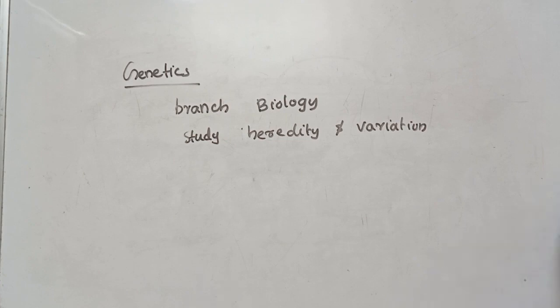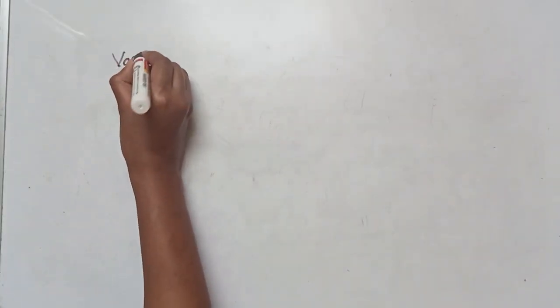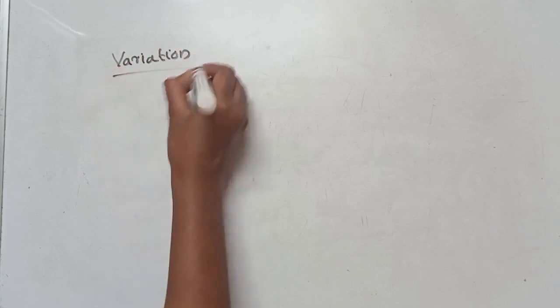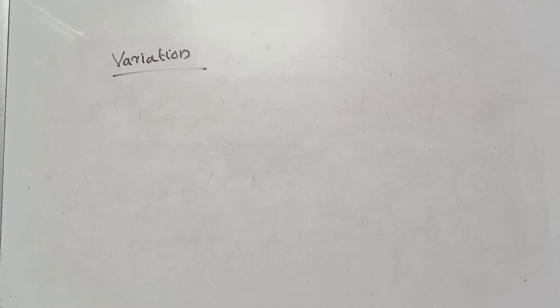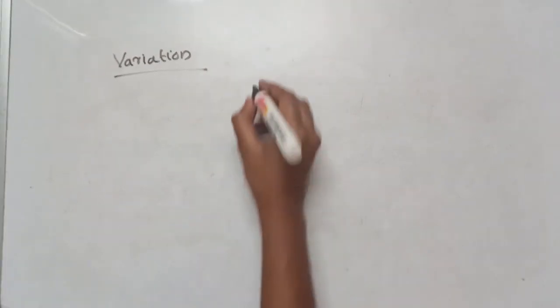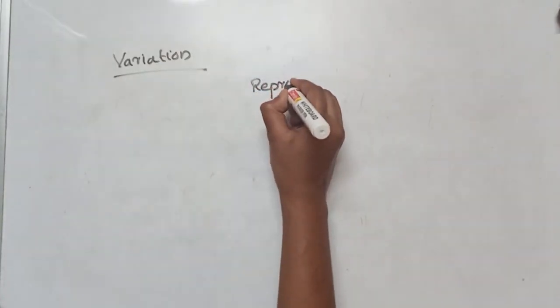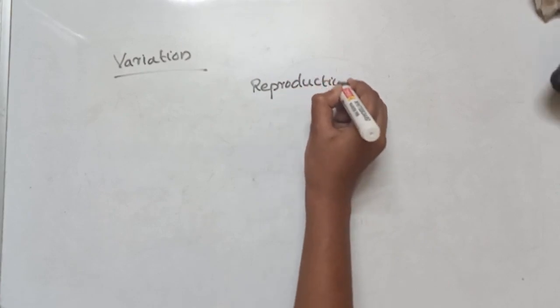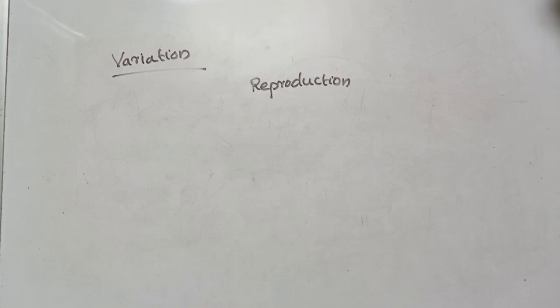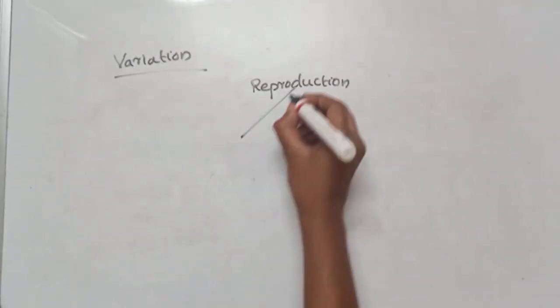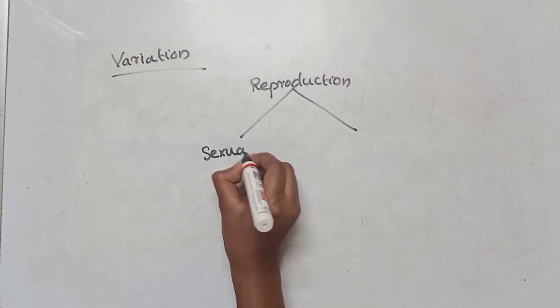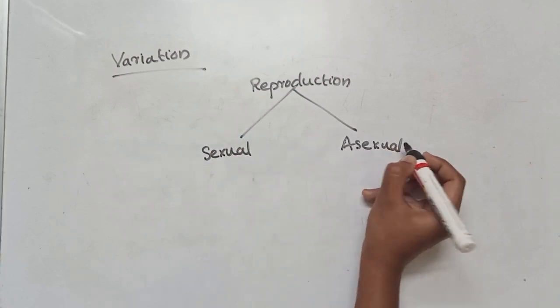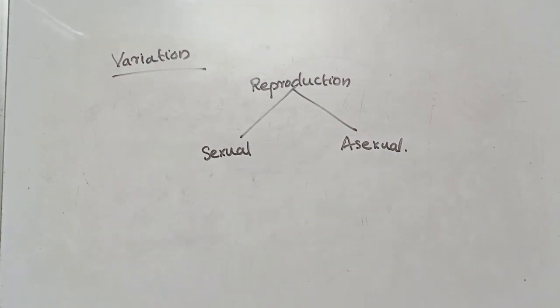Within one species, there are variations in characters. Now, thinking about reproduction — what are the two types of reproduction? The two types of reproduction are sexual reproduction and asexual reproduction.